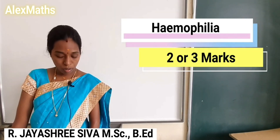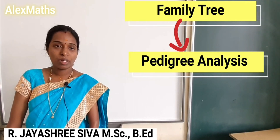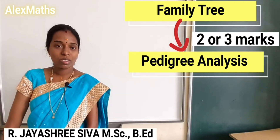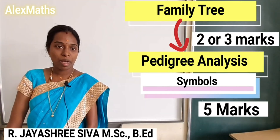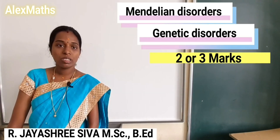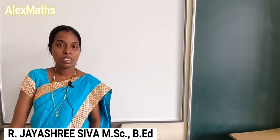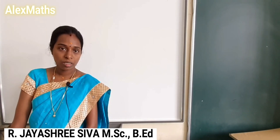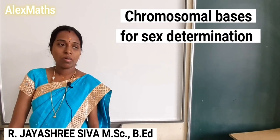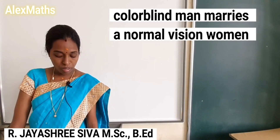Haemophilia is a 2-mark or 3-mark question and is an important topic. It is also related to the family tree, which is a pedigree analysis. Family tree refers to pedigree analysis and is also a genetic disorder question. For example: while a colorblind man marries a normal-vision woman, how does colorblindness affect the children?